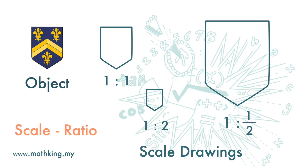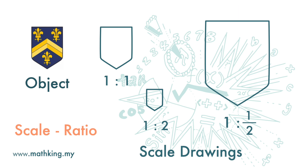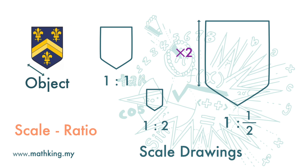Second, the ratio of the measurements remains unchanged. For example, if the ratio of the length of this side to this side of the emblem is 3 to 2, then the ratio of this side to this side of the drawing is also 3 to 2. So if the length of this side increases by 2 times, the length of this side also increases by 2 times.